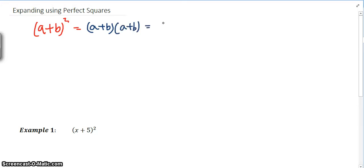If we use FOIL, what we get is a squared plus ab plus ab plus b squared. What we end up getting is a squared plus 2ab plus b squared. So the two red things, that is the shortcut formula.